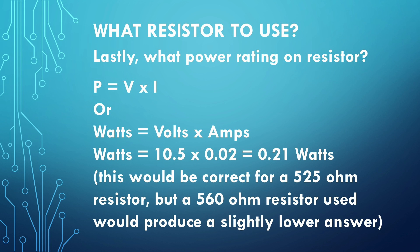With a 560-ohm resistor you'll have slightly less current, so slightly less wattage dissipated by the resistor as well. It's close enough that for estimating purposes you can use the LED's rated current. The ballpark answer is that you'll need something around a quarter watt.